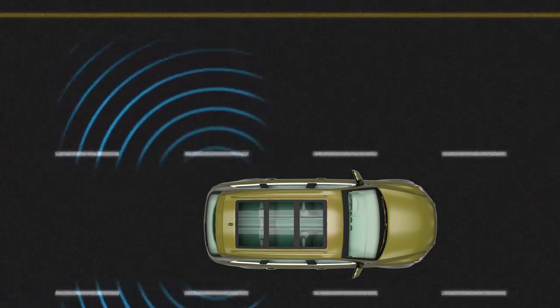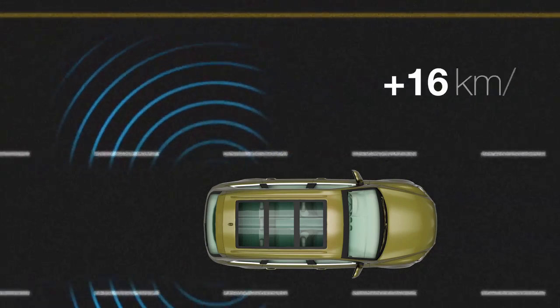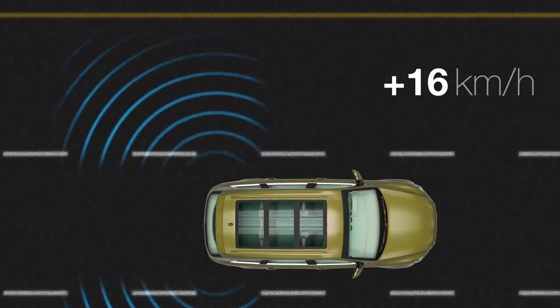When turned on, the Blind Spot Monitor is operational while the vehicle is moving at a speed greater than approximately 16 km per hour.